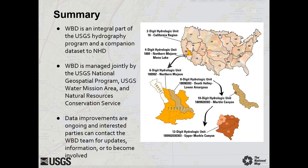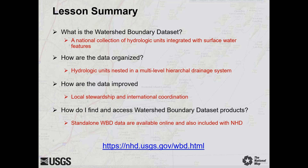WBD is an integral part of the USGS hydrography program and a companion dataset to the NHD. The WBD is managed jointly by the USGS and Natural Resources Conservation Service and is part of The National Map. Data improvements are ongoing and interested parties can contact the WBD team for updates, information, or to become involved. In this lesson, we described the watershed boundary dataset and its role in the national collection of hydrography data, covered the different levels of WBD and how the dataset is a nested hierarchical system, showed how the data are continuously improved with a specific focus on cross-border hydrologic units, and listed data resources within the USGS and other federal sites for WBD data access. Further information can always be found on the Watershed Boundary Dataset homepage, link shown below.